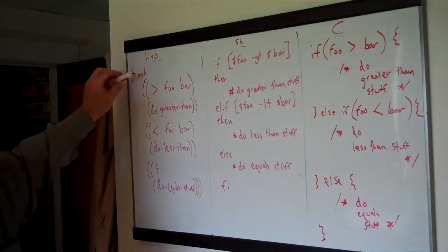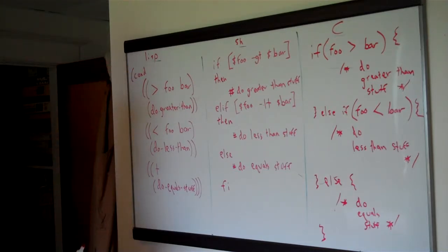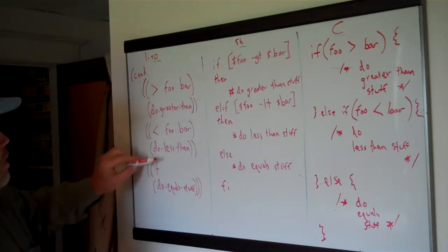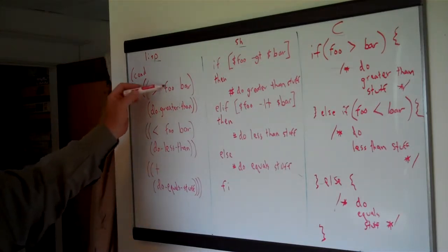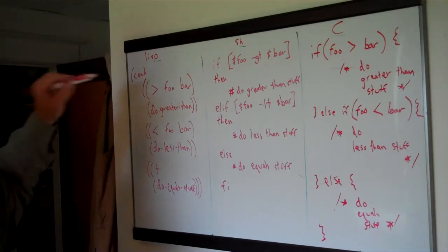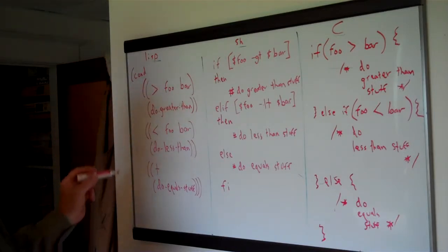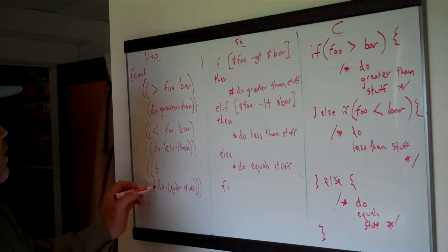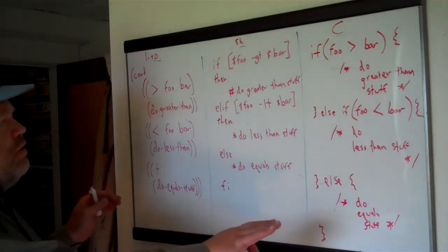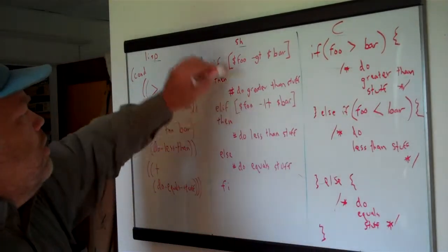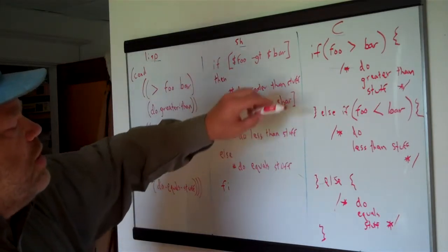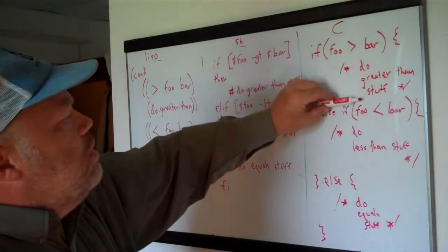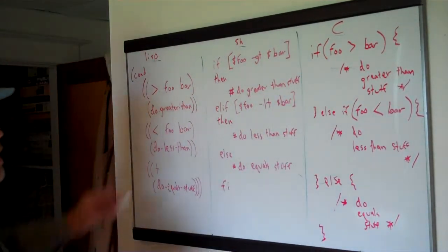In Lisp it looks a little different because instead of if, the Lispy way to do this is with cond, which stands for conditional, but it's the same sort of idea. You have a test and then a body to go with the test, then a test, then a body, then a test, then a body. So: if foo is greater than bar, do greater than; if foo is less than bar, do less than; and otherwise, t stands for true, meaning do this one if any of the others fail, then you do equal stuff. So in high-level languages, a lot of times even though things look different, you really have the same structure: do a test, and based on that test, do a block of stuff.